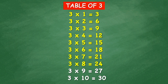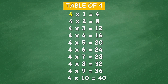3 times 9 equal 27, 3 times 10 equal 30. Table of 4: 4 times 1 equal 4, 4 times 2 equal 8, 4 times 3 equal 12, 4 times 4 equal 16, 4 times 5 equal 20, 4 times 6 equal 24, 4 times 7 equal 28, 4 times 8 equal 32, 4 times 9 equal 36, 4 times 10 equal 40.